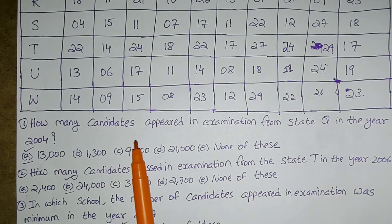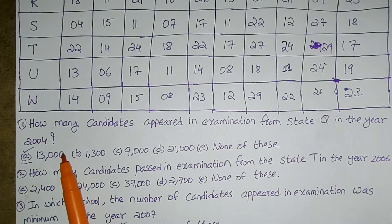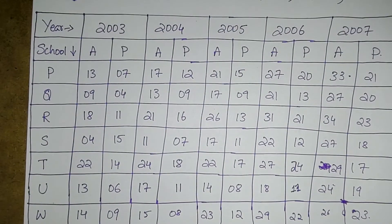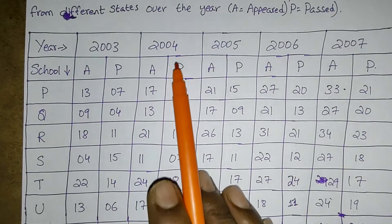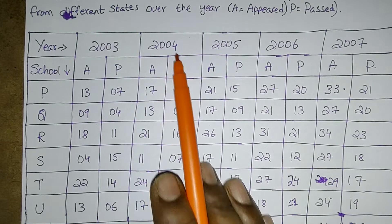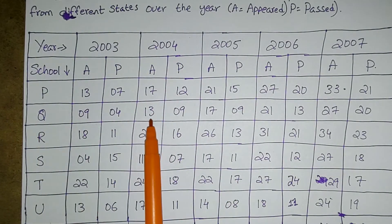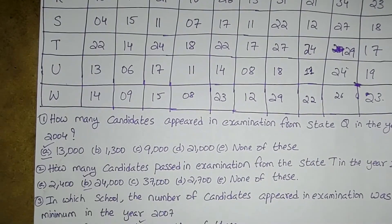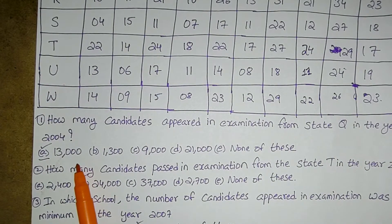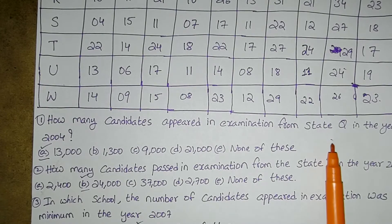How many candidates appeared in examination from state Q in the year 2004? Going back to the table — 2004, state Q, A stands for appeared. The answer is 13,000. That is the number of candidates appeared in examination from state Q. Like that we have to give the answers.